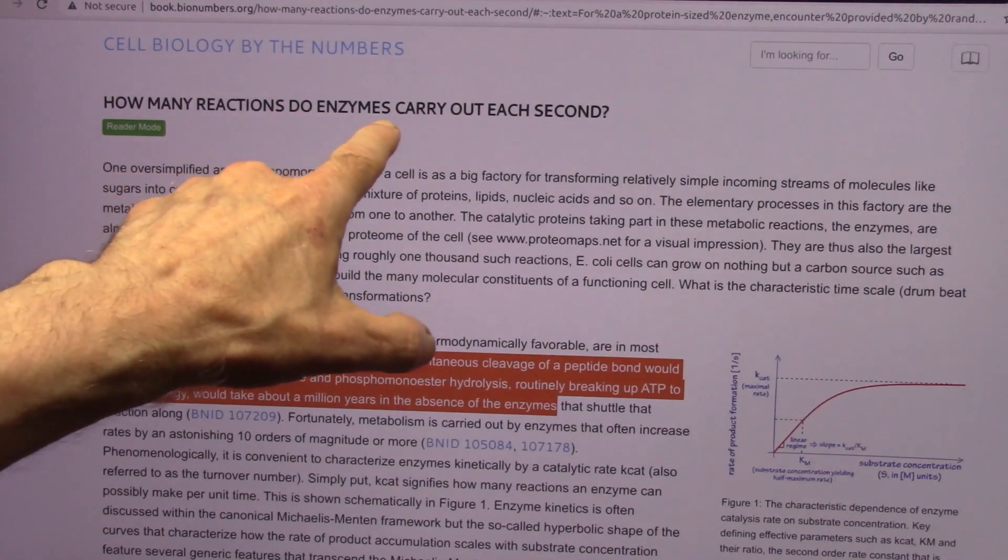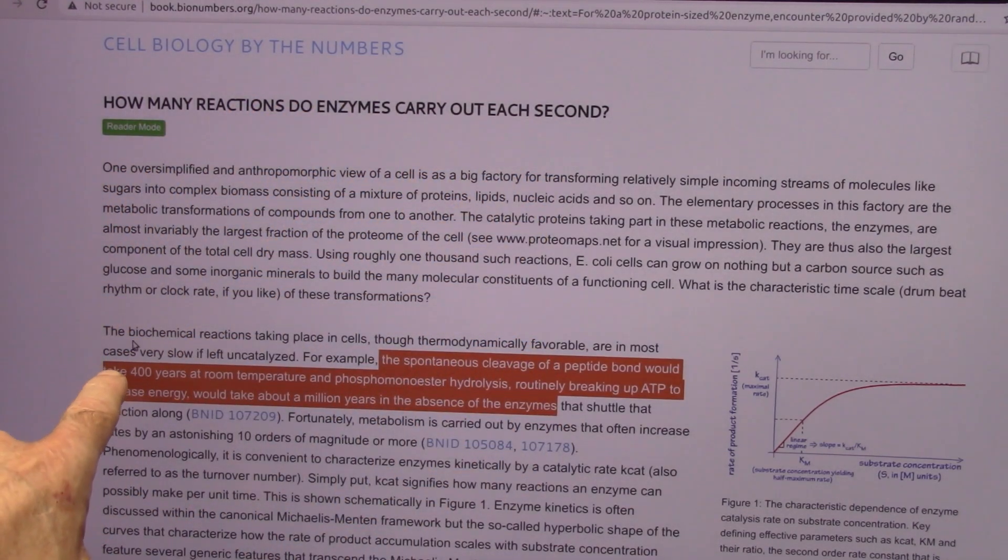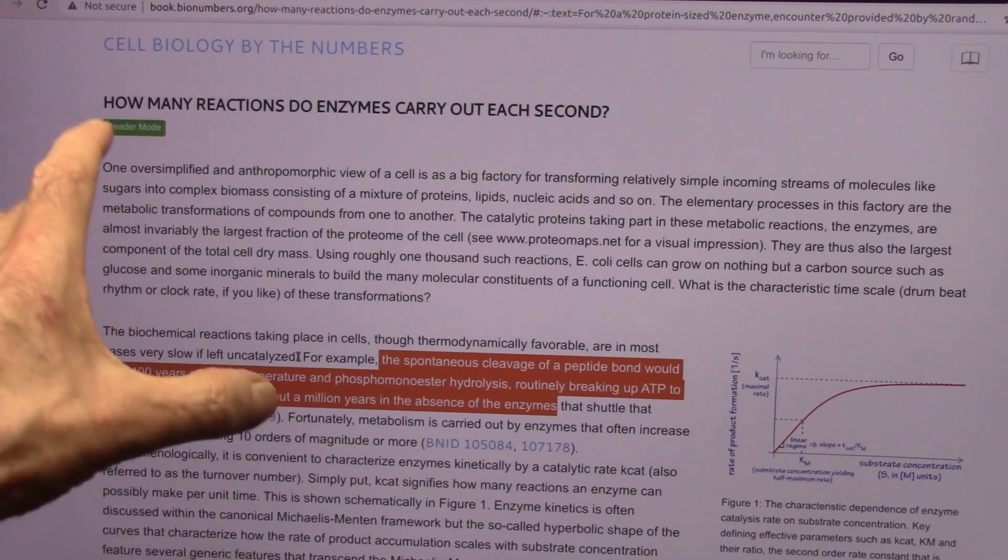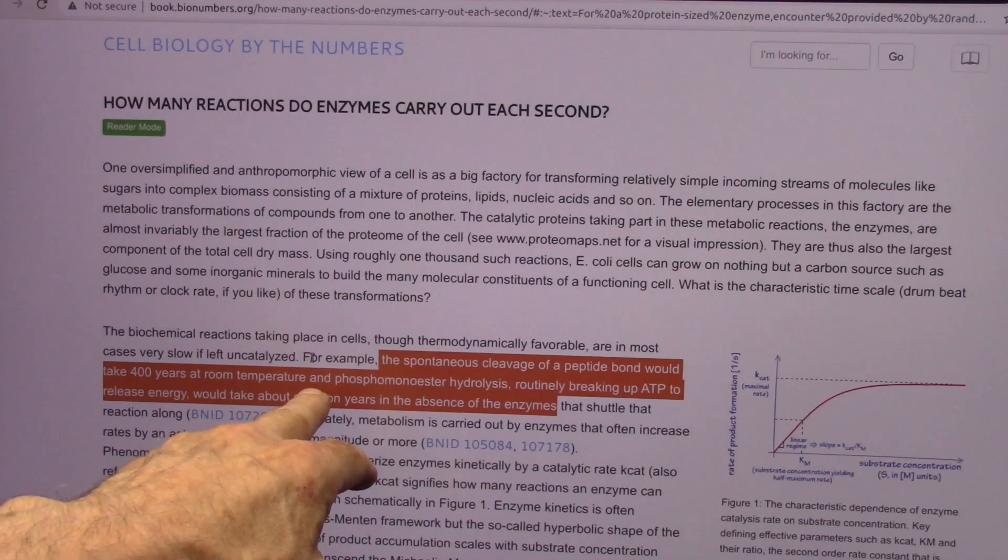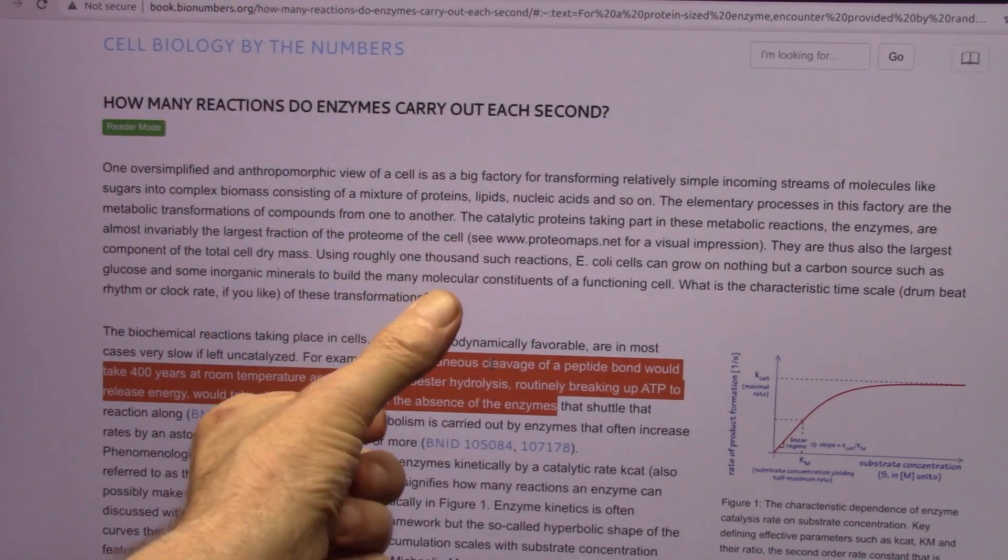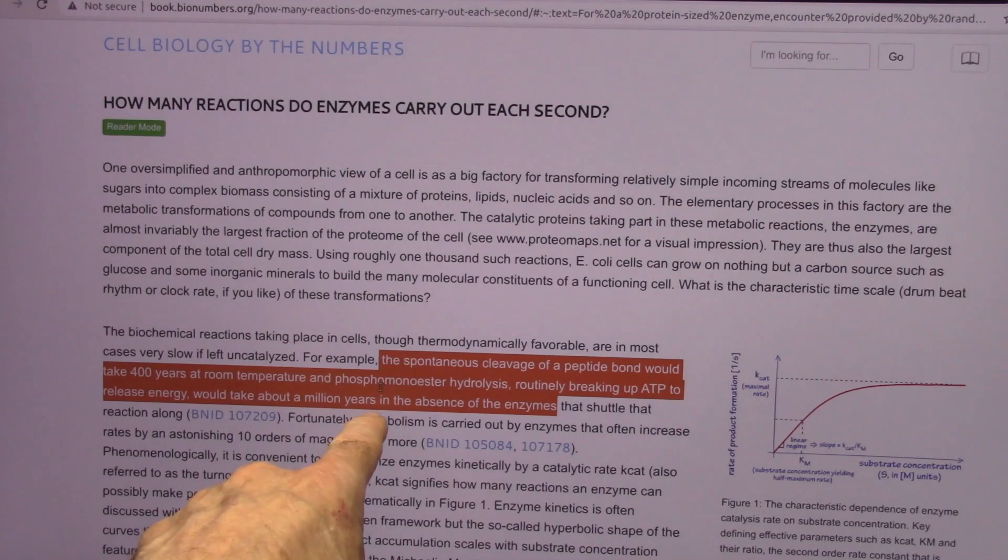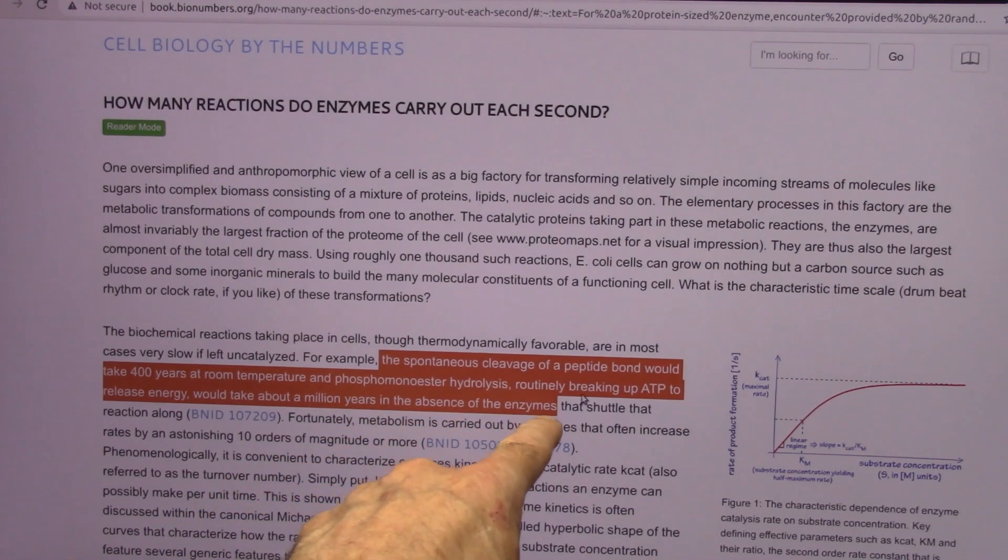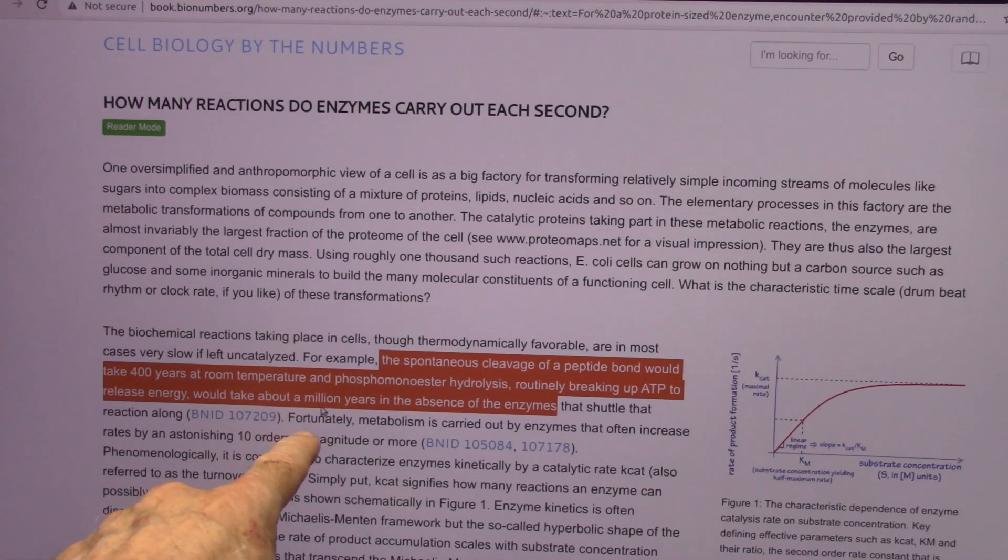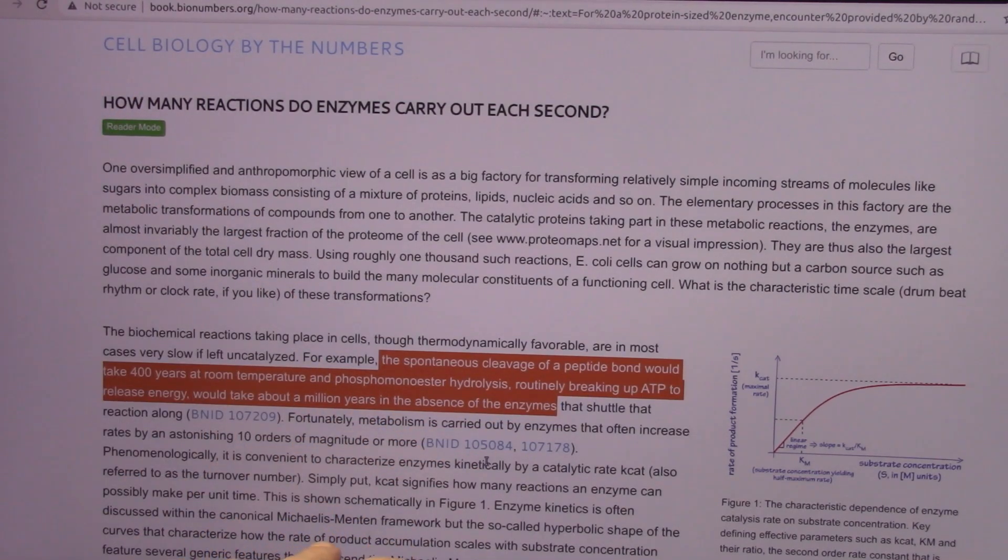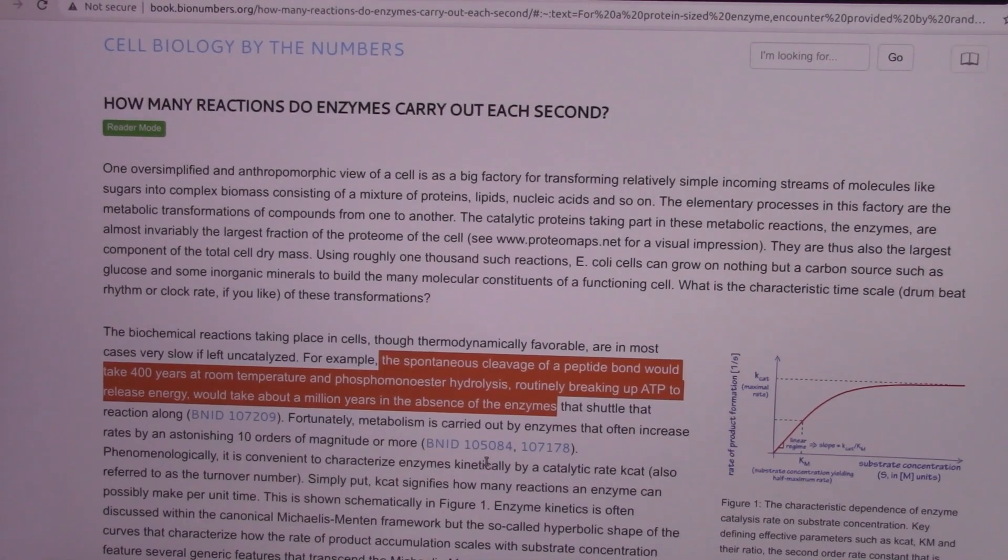All right, this is how fast enzymes react in your body every second. Listen to this. The biochemical reaction taking place in cells through thermodynamically favorable conditions are, in most cases, very slow if left uncatalyzed. Enzymes are the catalysts. That's what an enzyme is. It's a catalyst. For example, the spontaneous cleavage, that means to break apart, of a peptide bond would take 400 years at room temperature and the phosphomomesters of hydrolysis. Routinely breaking up ATP to release energy would take about a million years in the absence of enzymes. That means life does not work if you don't have these enzymes. The only way you get the enzymes is to have the bacteria. It's very, very straightforward and simple, but you have to have the bacteria.